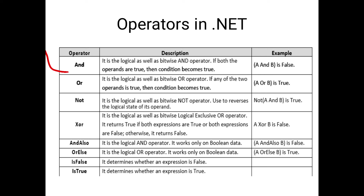The AndAlso operator is the logical And operator. It works only on boolean data. A AndAlso B is false. This operator works only as a logical operator, not a bitwise operator. The OrElse operator is the logical Or operator; it works only on boolean data, and A OrElse B is true. IsFalse determines whether an expression is false or not. IsTrue determines whether an expression is true or not. These are all the logical or bitwise operators: And, Or, Not, XOR, AndAlso, OrElse, IsFalse, and IsTrue.